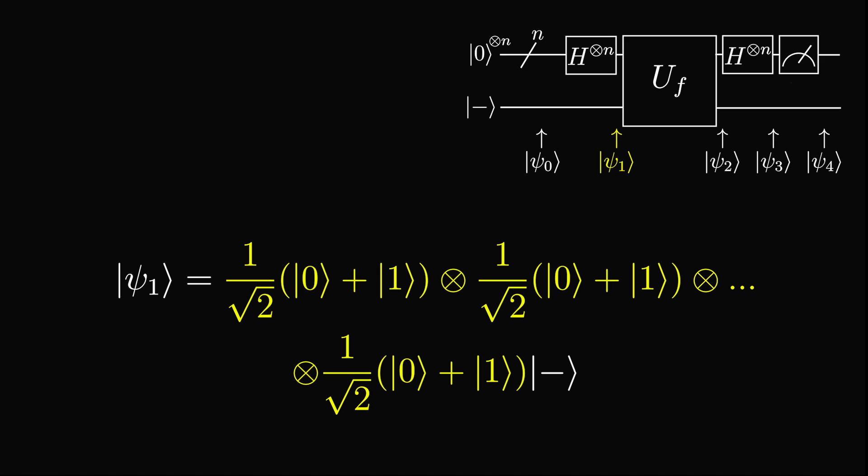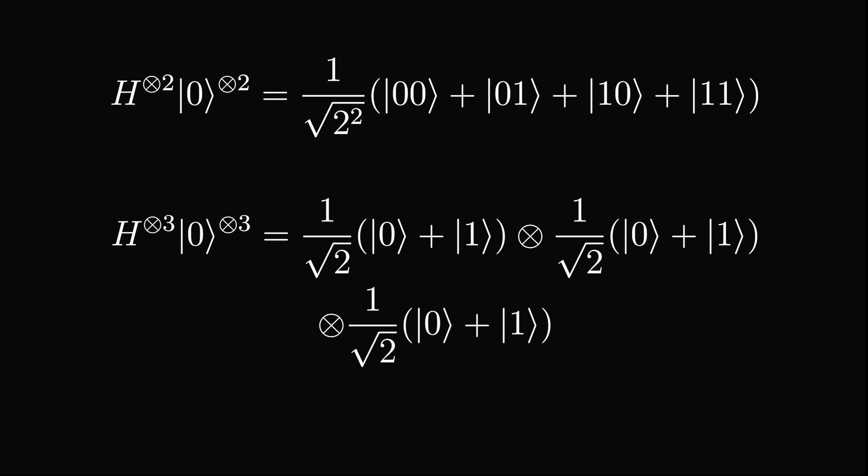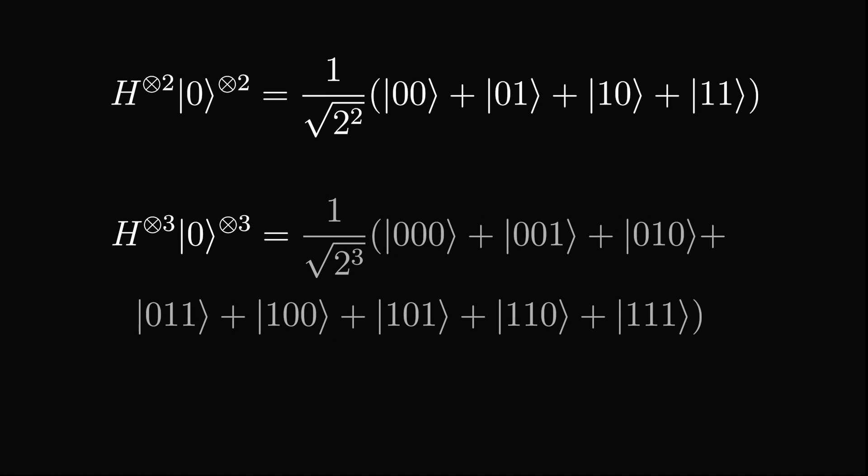To come up with an equation for this part of the state, let's try different values of n to find out how we can represent it. If we have n equals 2, the plus plus state, and we expand it out, it becomes 1 over root 2 squared, 0 0 plus 0 1 plus 1 0 plus 1 1. If we have n equals 3, we get plus plus plus, which expands to this.